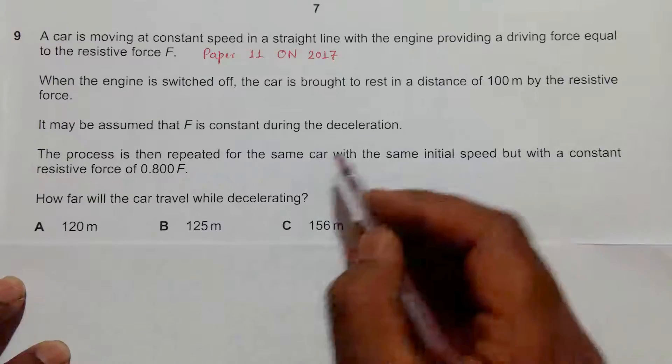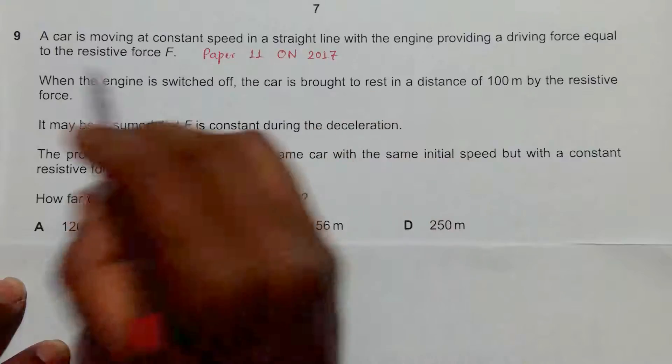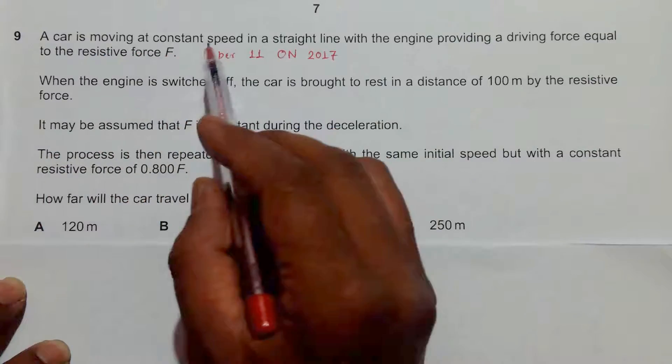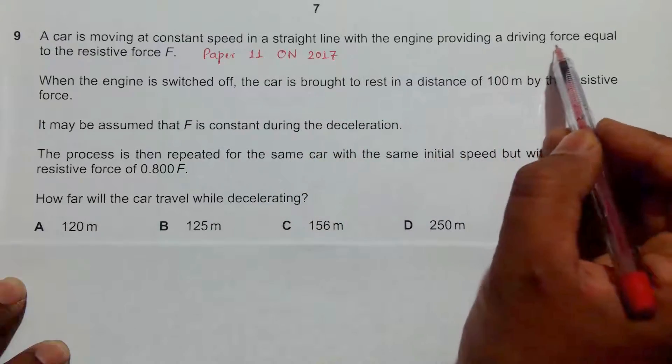This is a question from 2017 October November Paper 11, question number 9. It says that a car is moving at a constant speed in a straight line with the engine providing a driving force equal to the resistive force.